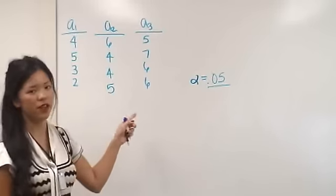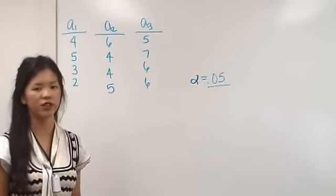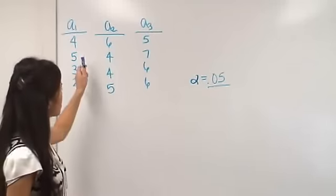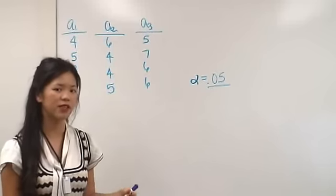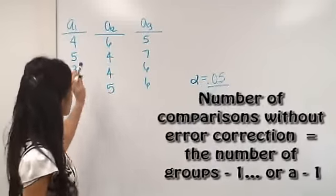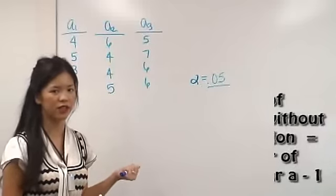So if we have a bunch of comparisons that we try to do, chances are we could get significance even if we don't really have it. So number of planned comparisons that we can do, and by planned I mean you're doing it before you've seen the data, is limited to your number of groups minus one. So here it would be two, before you have to start correcting for type one error.